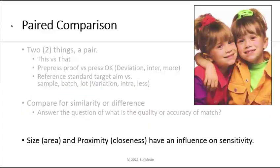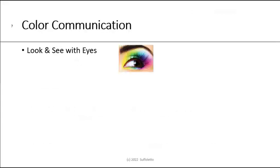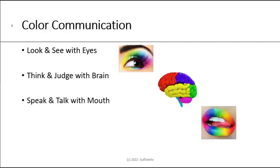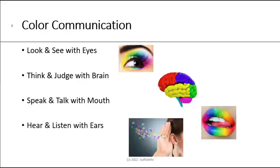The purpose of this paired comparison is to answer the question of what is the quality or accuracy of the match between these two things — the pair. Obviously, the size, area, and proximity — the closeness — of the 'this' and 'that' have an influence on sensitivity: the larger, the more sensitive, and the closer, the more sensitive. Here's my workflow for color communication: with your eyes you look and see the color, that gets sent to your brain and you think about and judge the color, then with your mouth you speak and talk about what you saw, and with someone else's ears they hear and listen. For effective color communication, it's based on language, language is based on terms, and those terms have to have definitions — we want to share these common terms.